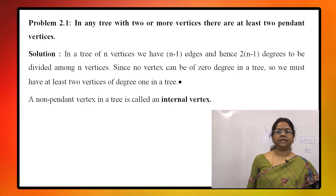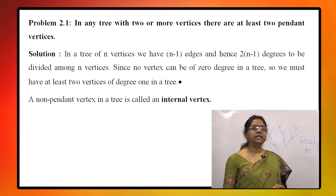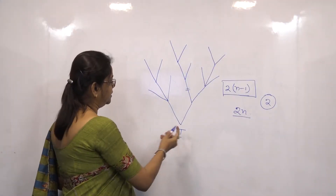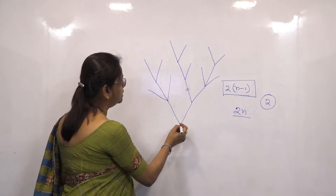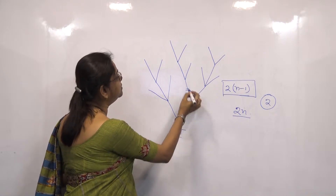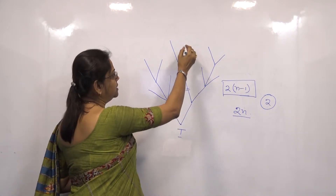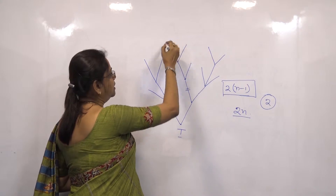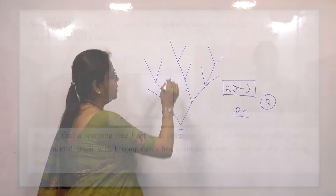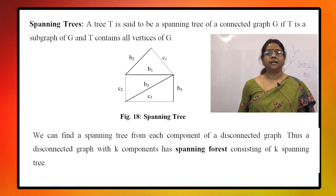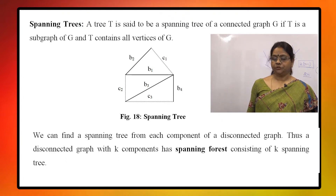A non-pendant vertex in a tree is called an internal vertex. This is an internal vertex, this is an internal vertex, this is an internal vertex, and all these remaining vertices are pendant vertices. Now we come to another definition: the spanning tree.